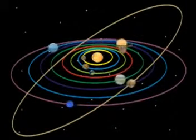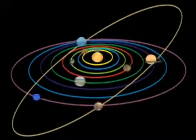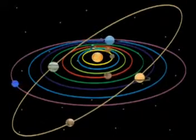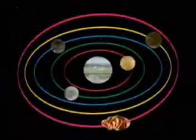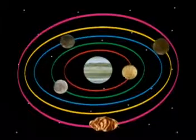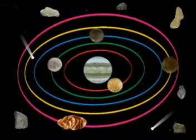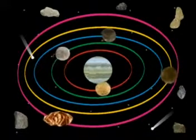In short, the solar system is made up of the sun, planets revolving around the sun, satellites revolving around the planets, asteroids, comets, meteors, and other celestial objects.